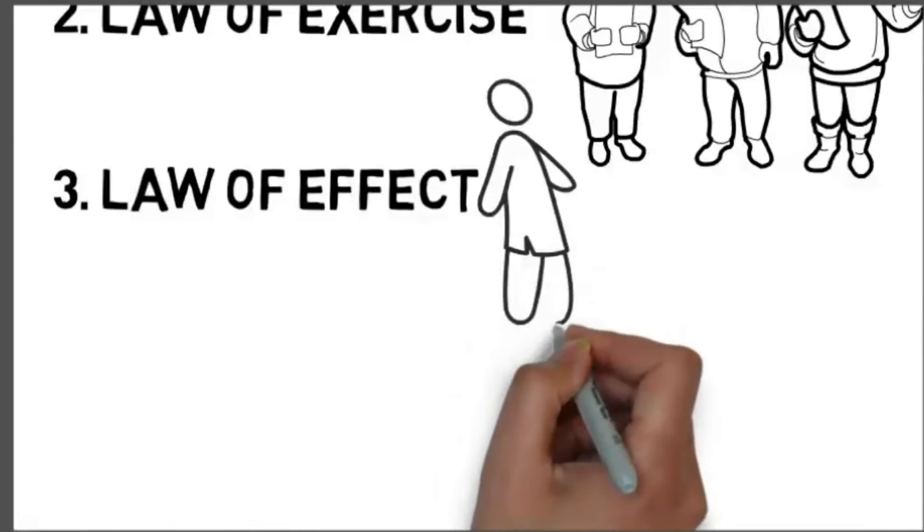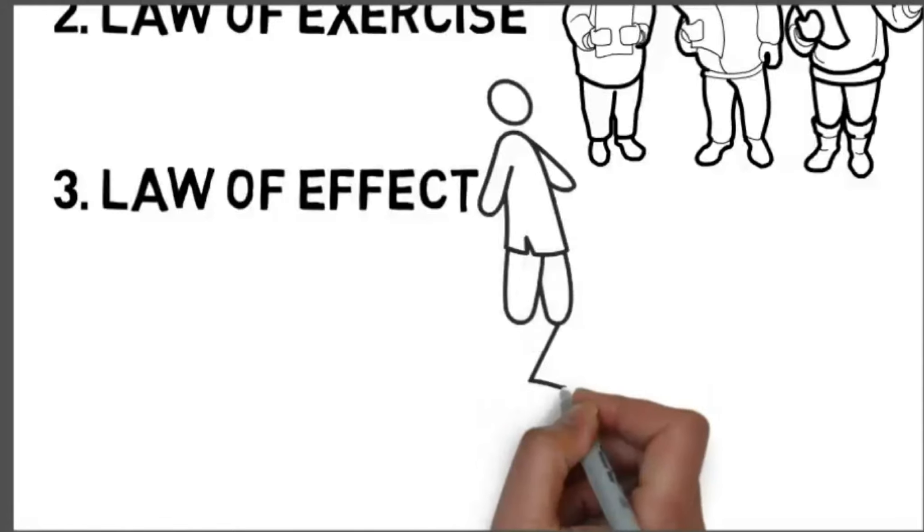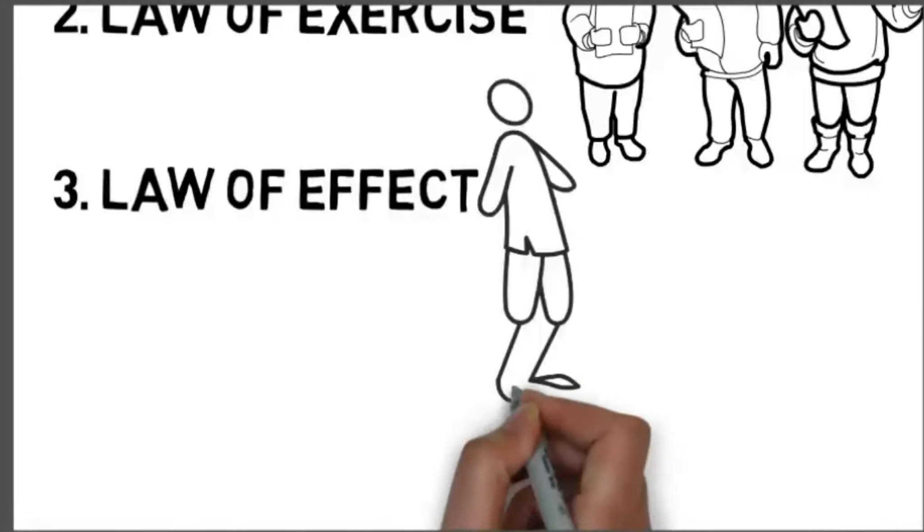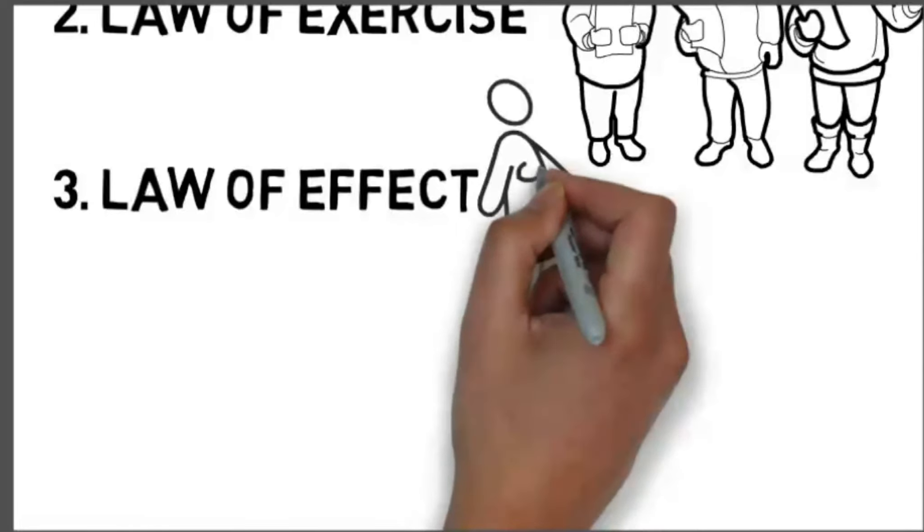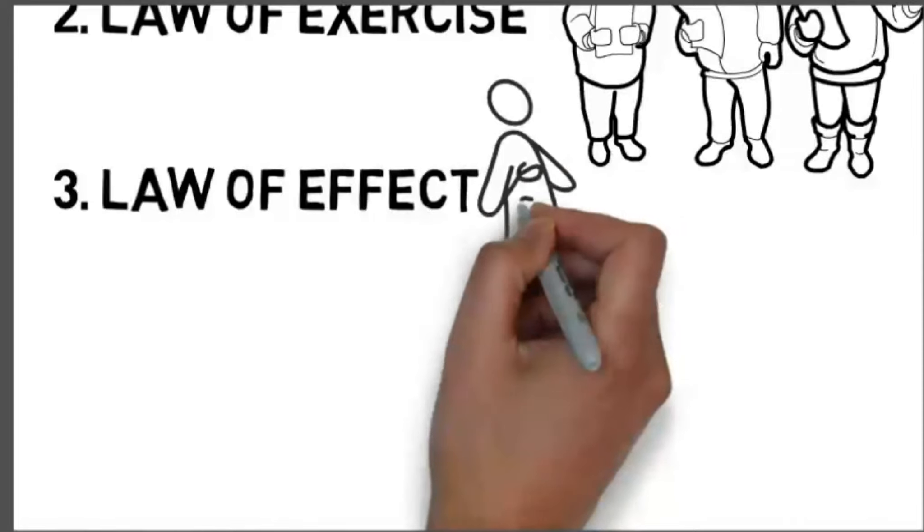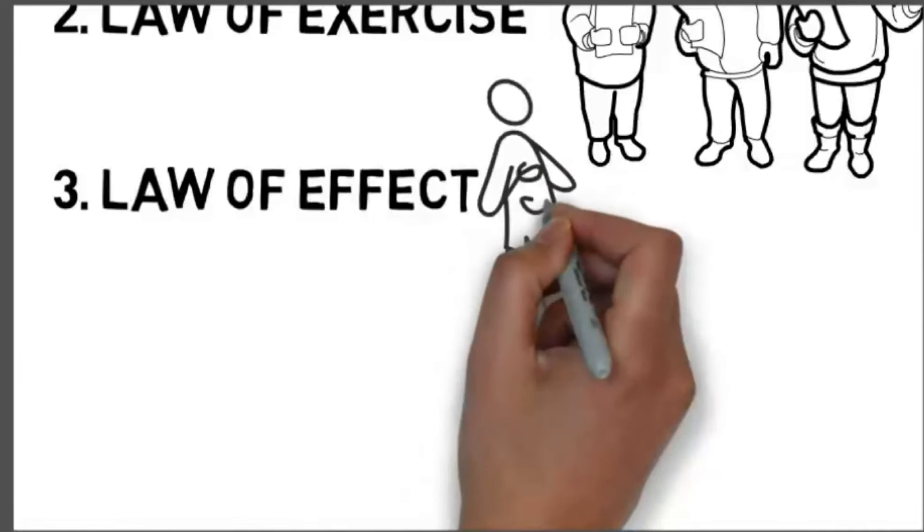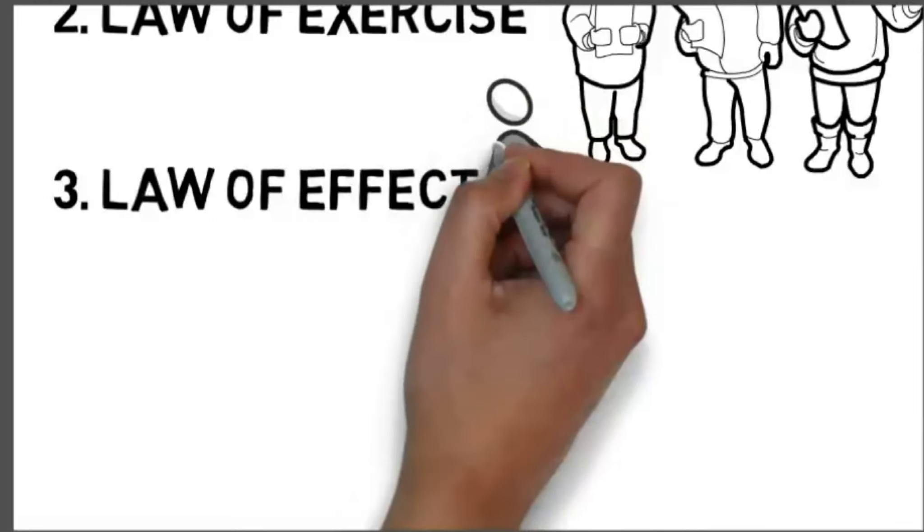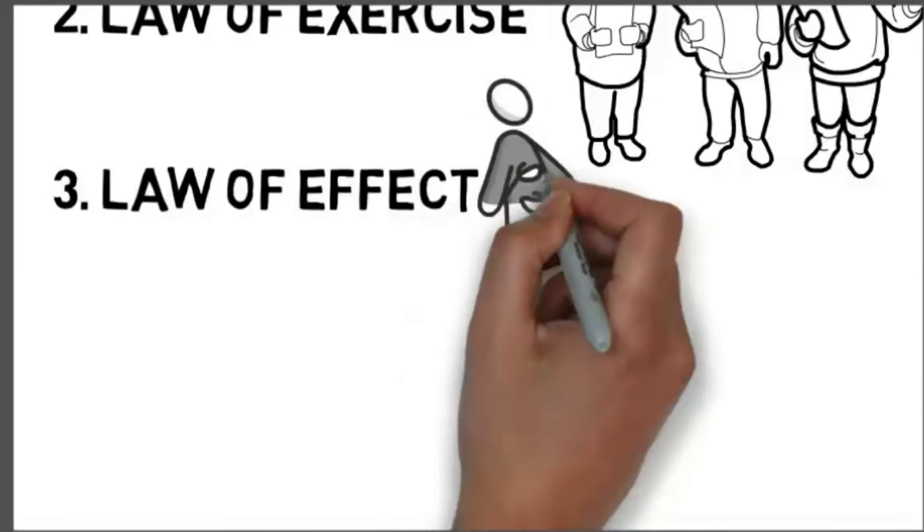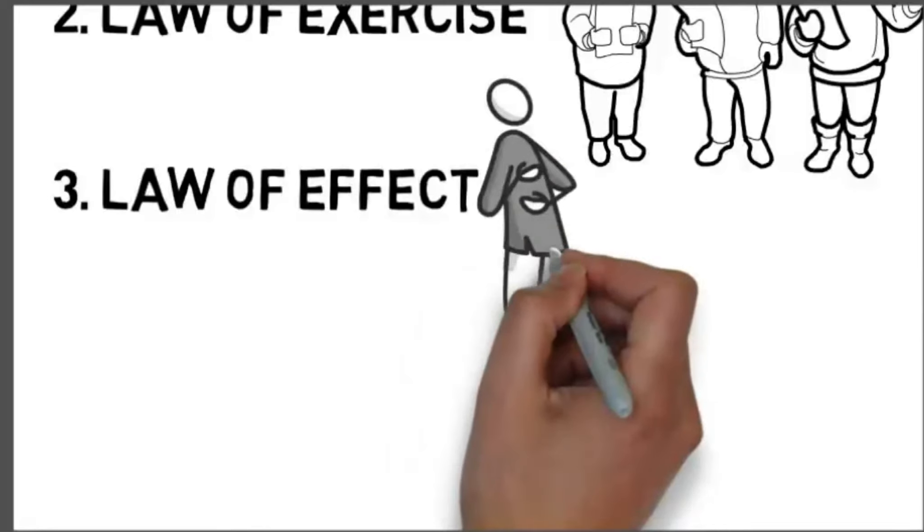Thorndike revised this law in 1930, and according to this revision, he stated that reward strengthened the response, but punishment did not always weaken the response. He placed more emphasis on the reward aspect than on the punishment aspect of the law of effect.